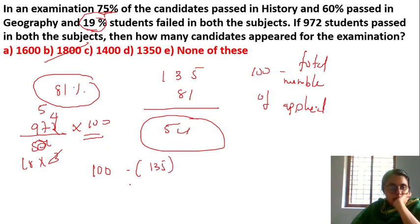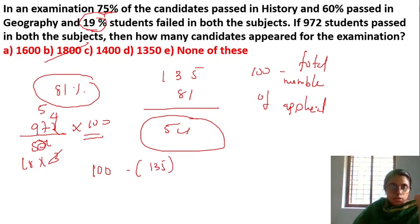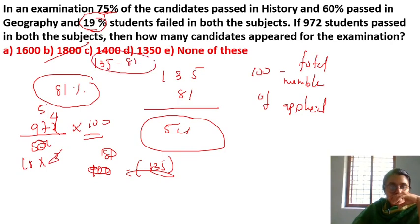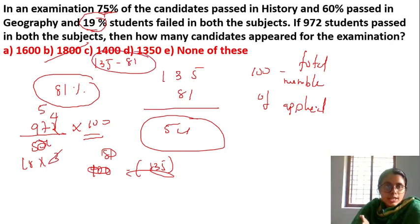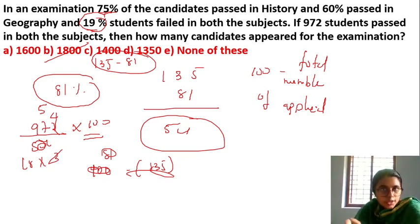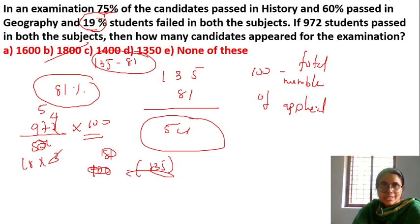So how much percentage? 135 minus 81 gives the percentage of both subjects. 972 students represent 54%. Total is calculated accordingly. So you assume and calculate to get 1800.